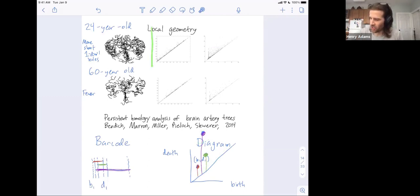So now I can complete our story. Here are the zero and one dimensional persistent homology barcodes for this 24 year old brain and the 60 year old brain.